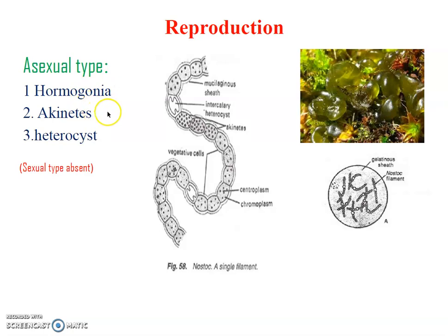The second type is akinetes. Akinetes are specialized cells which store food material, so they are bigger in size. When there are unfavorable conditions, all other cells die. But akinete cells store food material so they survive for a long time. After favorable conditions return, these akinete cells develop into a new filament. This is also a type of reproduction by which a new Nostoc filament is formed.